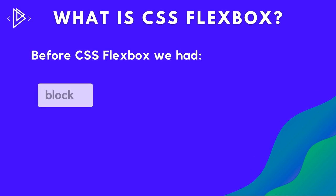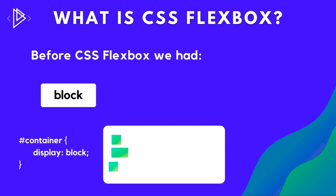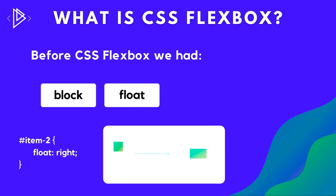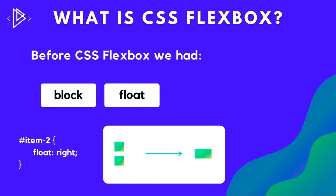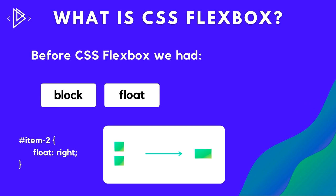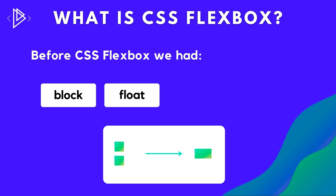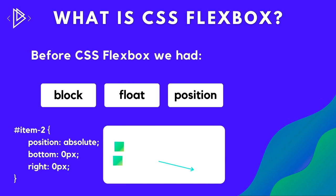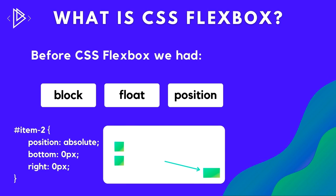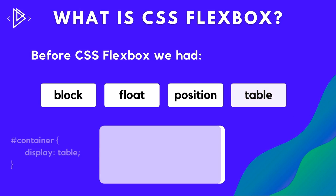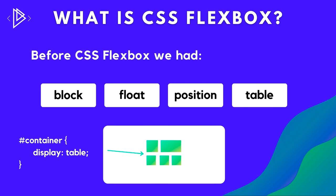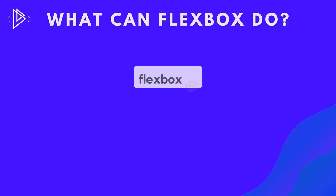Before Flexbox there were four basic ways to lay out elements: block layout, which spans the width of the whole page; floats, so you could have text and an image side by side; position, for specific positioning of an element; and finally — going way back — tables, where you'd create a table with cells and fill them with elements.